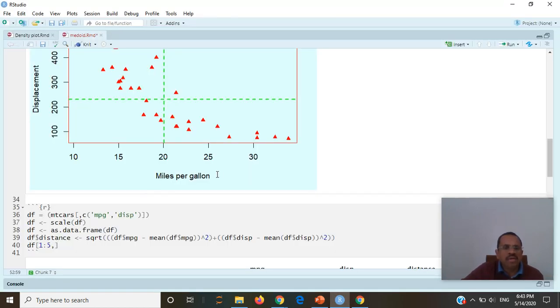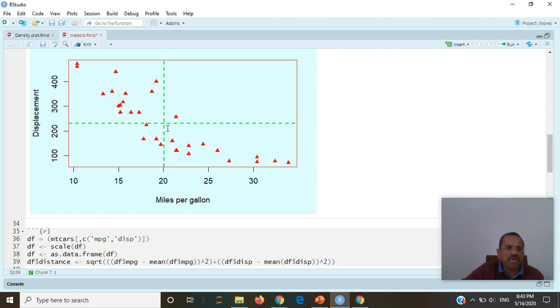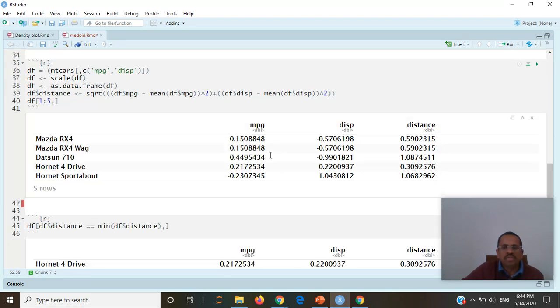I calculated a distance from this centroid point to every member of the vector. This is my dataset with miles per gallon and displacement vectors.